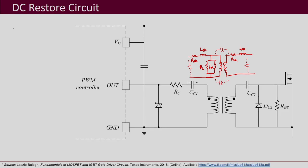Designing the transformer such that these parasitics are minimized is a key challenge when using pulse transformer based gate drivers. As silicon carbide and gallium nitride devices operate at very high switching frequencies, parasitic capacitances of the transformer may also become important. Overall, transformer parasitics can distort waveforms, making transformer design a significant challenge.